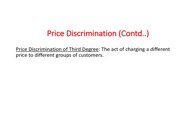Third-degree price discrimination involves a manufacturer — say, located in Japan — dividing the world market into different segments such as Europe, the US, Asia, and Latin America, and charging different prices to each market based on price elasticity of demand. This is called pricing according to the market.